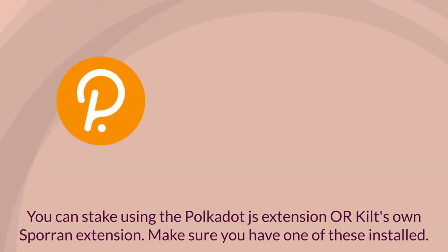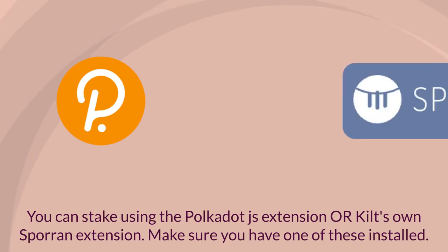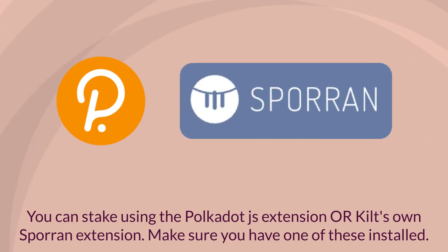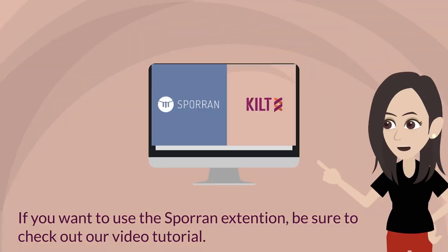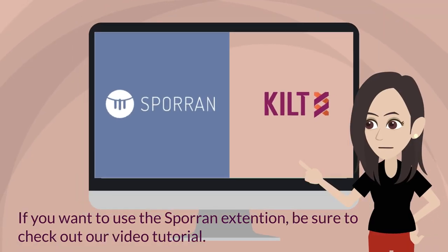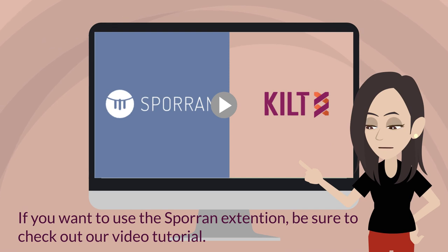You can stake using the Polkadot.js extension or KILT's own Sporran extension. Make sure you have one of these installed. If you want to use the Sporran extension, be sure to check out our video tutorial.